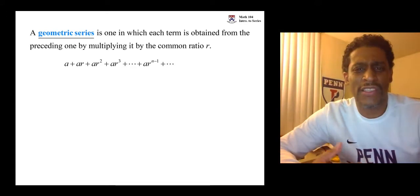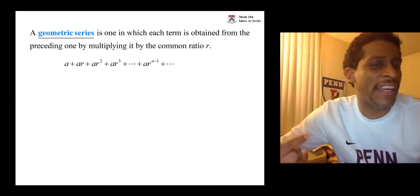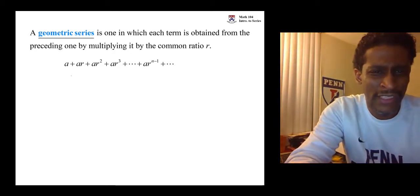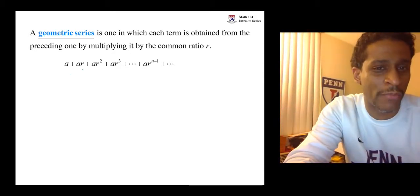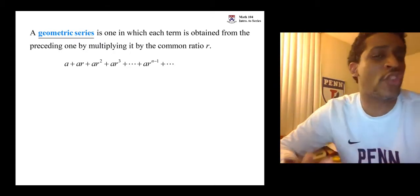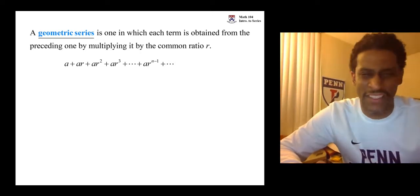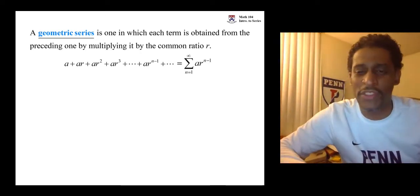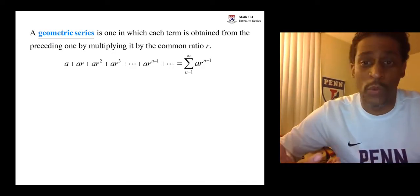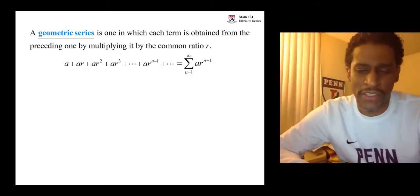In general, the symbol for the nth term is AR to the n minus 1. You see, when we're at the first term, there is no R. When we're at the second term, R's exponent is 1. When we're at the third term, R's exponent is 2. So the exponent on R is 1 less than the term you're at. So if we start this at 1 generically, this is one way to represent a generic geometric series.